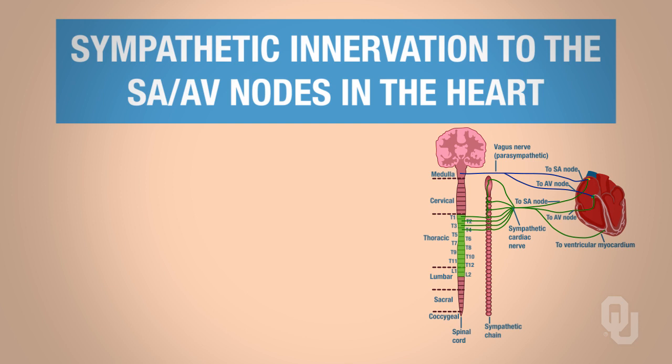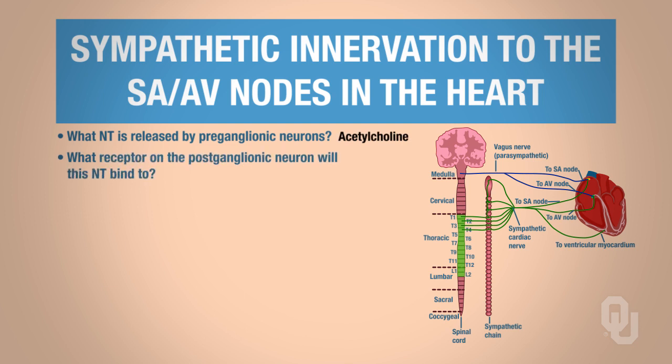When we think about sympathetic innervation, we recall from previous chapters that the neurotransmitter always released from a preganglionic neuron is acetylcholine. The receptor on the postganglionic neuron to which acetylcholine will bind is a nicotinic cholinergic receptor.